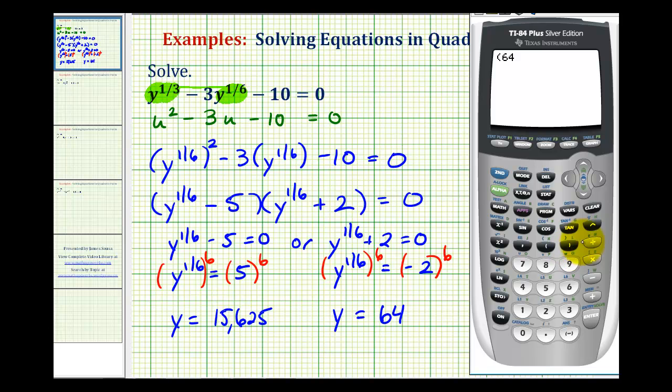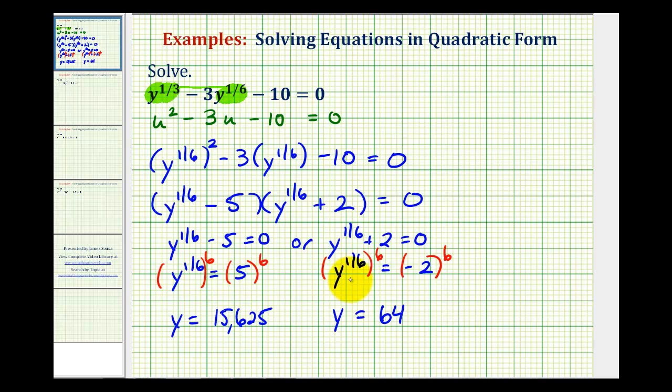So we'll have 64 to the one-third power minus three times 64 to the one-sixth power minus ten. Notice how this does not equal zero and therefore 64 is not a solution. So we must exclude this as a solution. So we only have one solution to this equation.